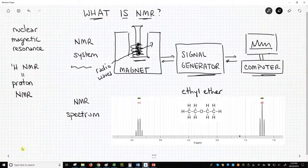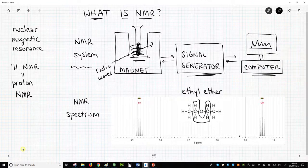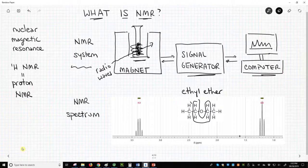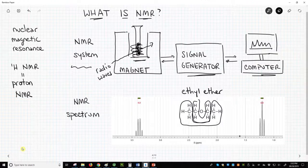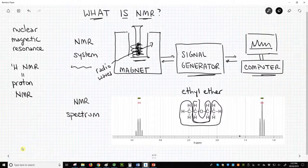Notice that ethyl ether has two different kinds of hydrogens in the molecule – the hydrogens on the CH2 groups and the hydrogens on the CH3 groups. Those two types of hydrogens show up as two sets of peaks.